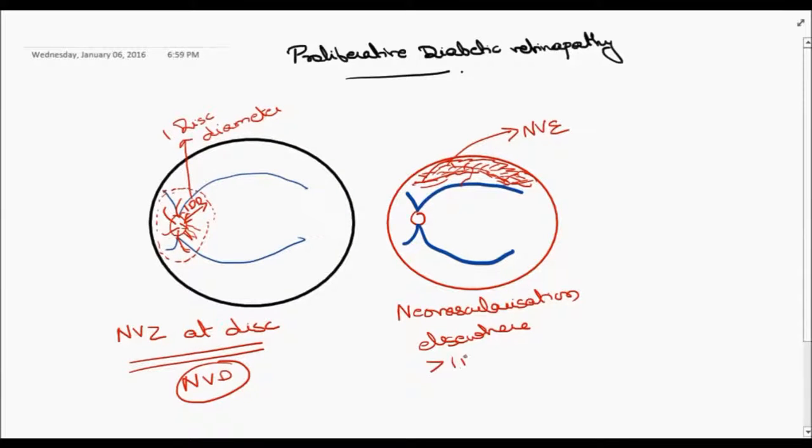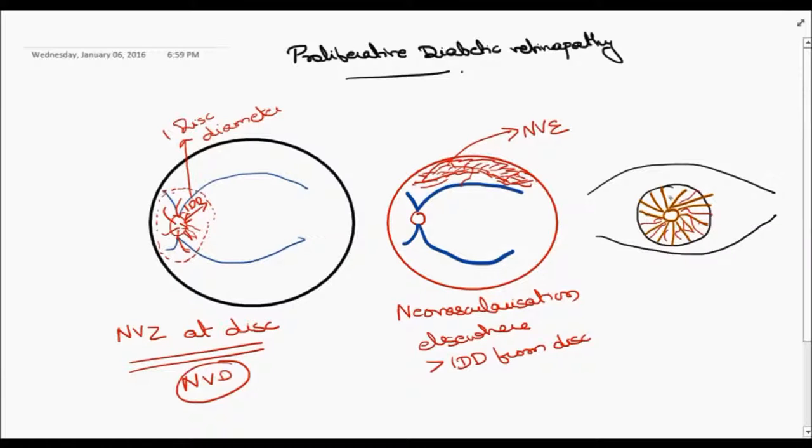The third type is an advanced stage in which new vessels are formed in the iris, called neovascularization of the iris or rubeosis iridis. There is an increased chance of neovascular glaucoma due to this.